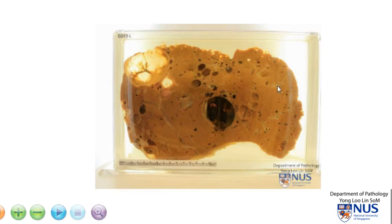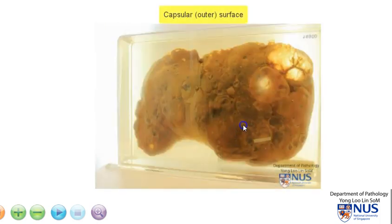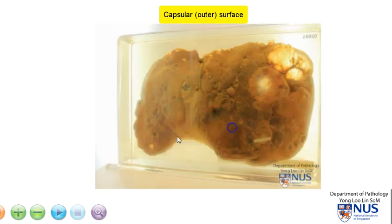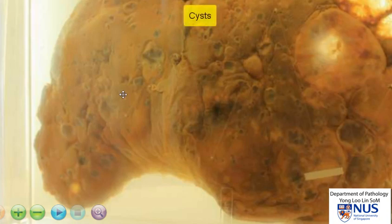We're looking at a specimen of a liver where this is the cut surface, and I'm going to turn this around. What we're looking at here is the capsular surface. Let's zoom in a little bit, and you can appreciate here that there are many cysts within the liver.